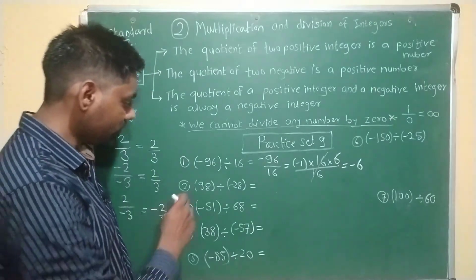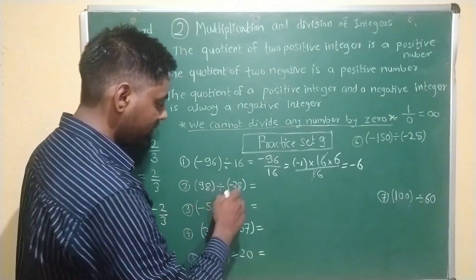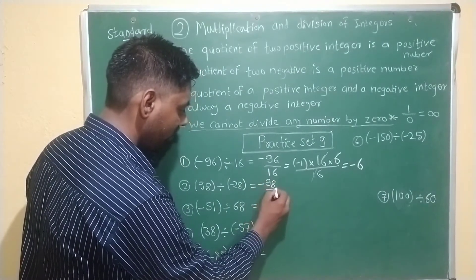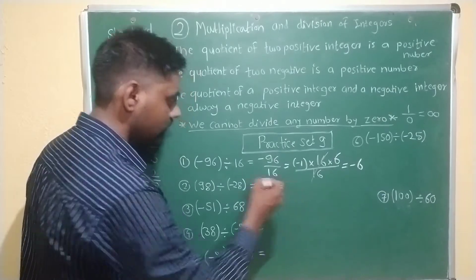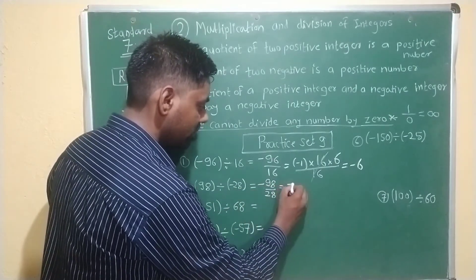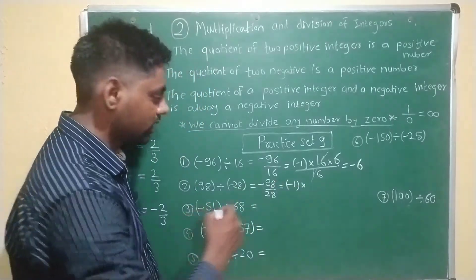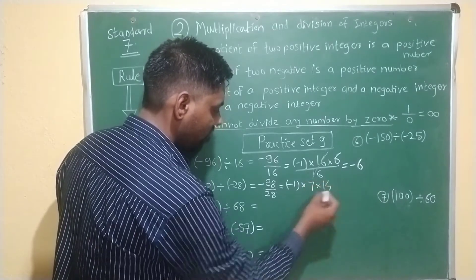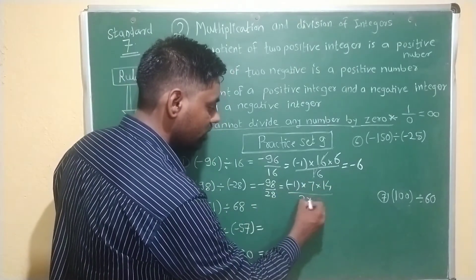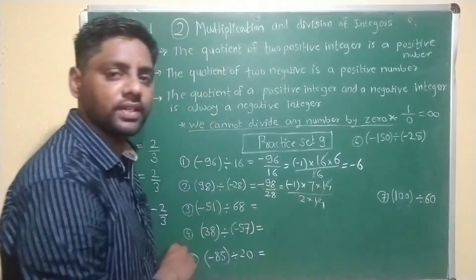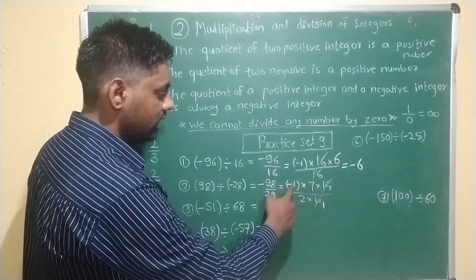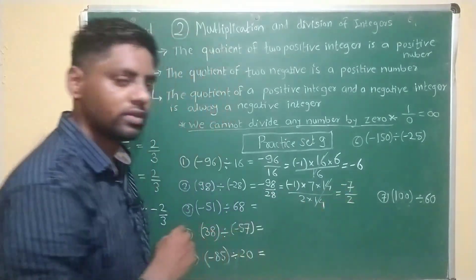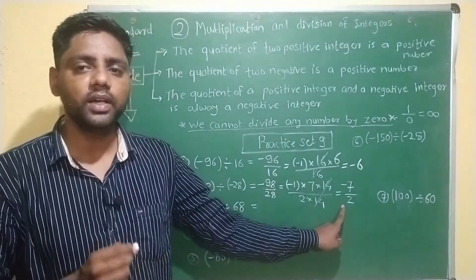Next example: 98 divided by minus 28. We write minus 98 divided by 28. Here minus sign is present, so minus 1 multiplied by 98. Since 98 equals 7 into 14 and 28 equals 2 into 14, the 14 gets cancelled. 7 multiplied by minus 1 gives minus 7. The remaining denominator is 2, so the answer is minus 7 over 2.